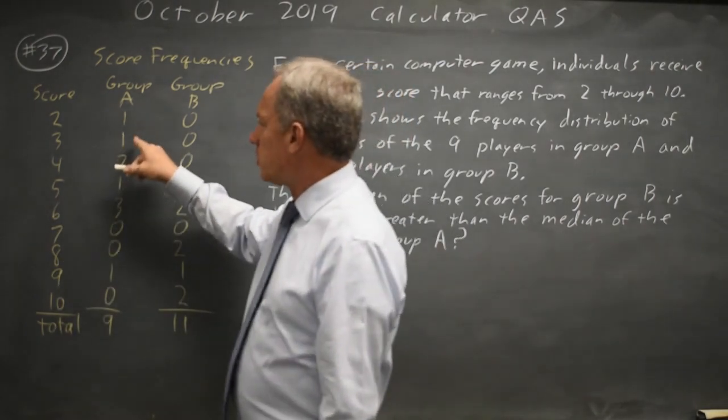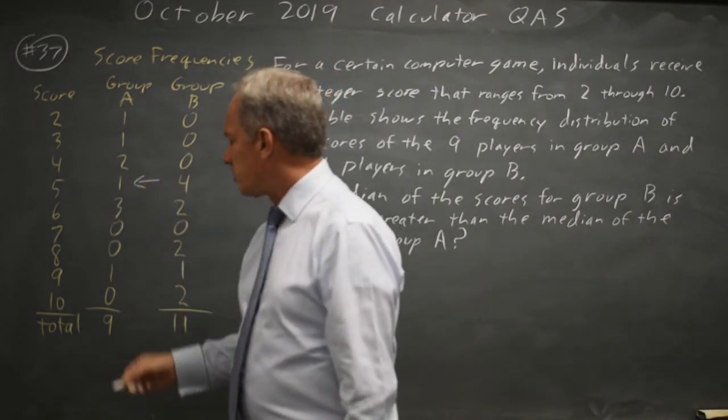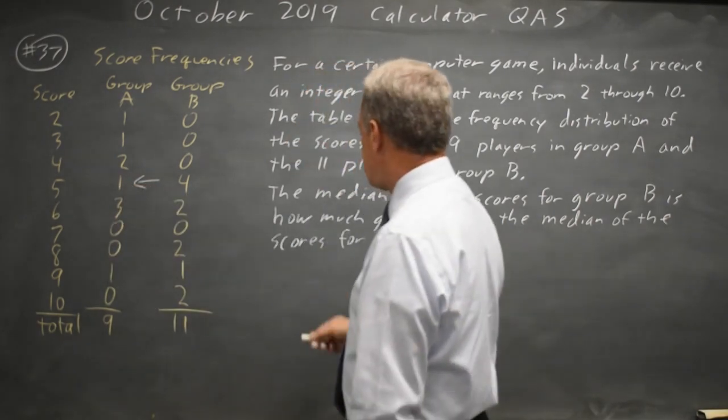So the middle score of these nine would be one, two, three, four, five. The fifth from the bottom, or one, three is four, five from the top also. So the median for A is five.